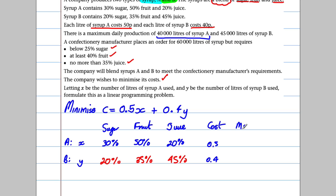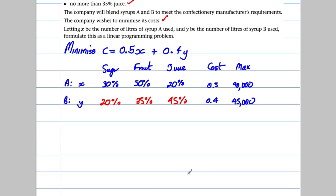There's a maximum daily production of 40,000 litres of syrup A and a maximum of 45,000 litres of syrup B. The confectioner places an order for 60,000 litres of syrup with the percentage requirements already stated.